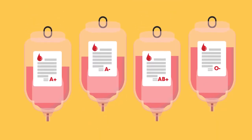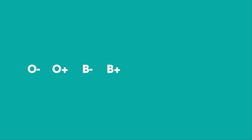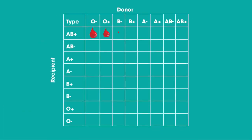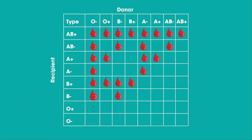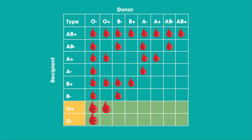Different people have different blood types or groups. You can be either O, B, A, or AB. If you're given a blood transfusion, you must have blood which is compatible with your blood type. So if you're one of the AB blood groups, you can receive blood from all or lots of donors. Whereas if you're blood type O, you can only receive blood from other O's — or if you're O-negative, you can only receive blood from other O-negative donors.